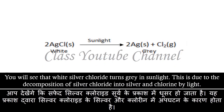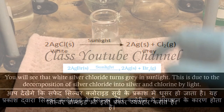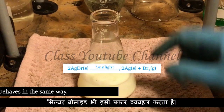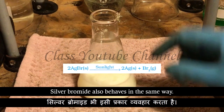You will see that white silver chloride turns gray in sunlight. This is due to the decomposition of silver chloride into silver and chlorine by light. Silver bromide also behaves in the same way.